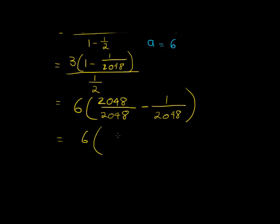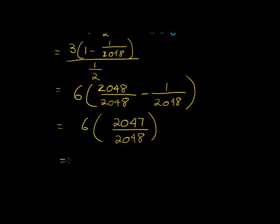And in the numerator I have now 2047 over 2048. And all I need to do is multiply the 6 in. First of all, I can see, I can ask myself, can 6 divide into this number? 6 can't divide into this number.